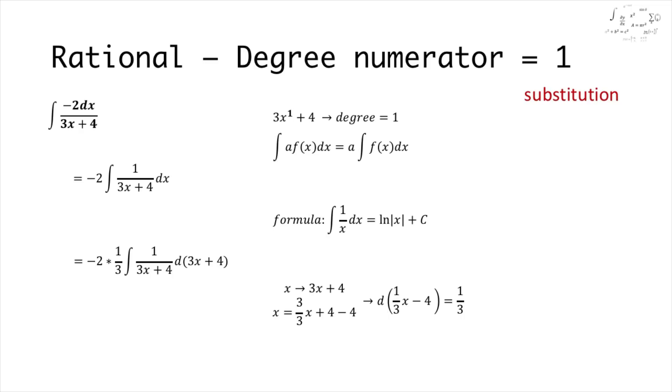We do this by first calculating the derivative which is equal to 1 over 3, and then again using the possibility of putting an integer outside the integral. Now we get a clean exercise which is in the form of the given formula, the integral of 1 over x dx, and we just have to fill in.